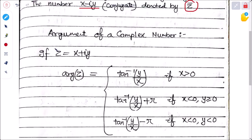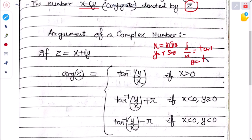The argument of z is given by arg(z) = tan⁻¹(y/x), because if x = r cos θ and y = r sin θ, dividing gives y/x = sin θ/cos θ = tan θ, so θ = tan⁻¹(y/x). This formula applies when x > 0.